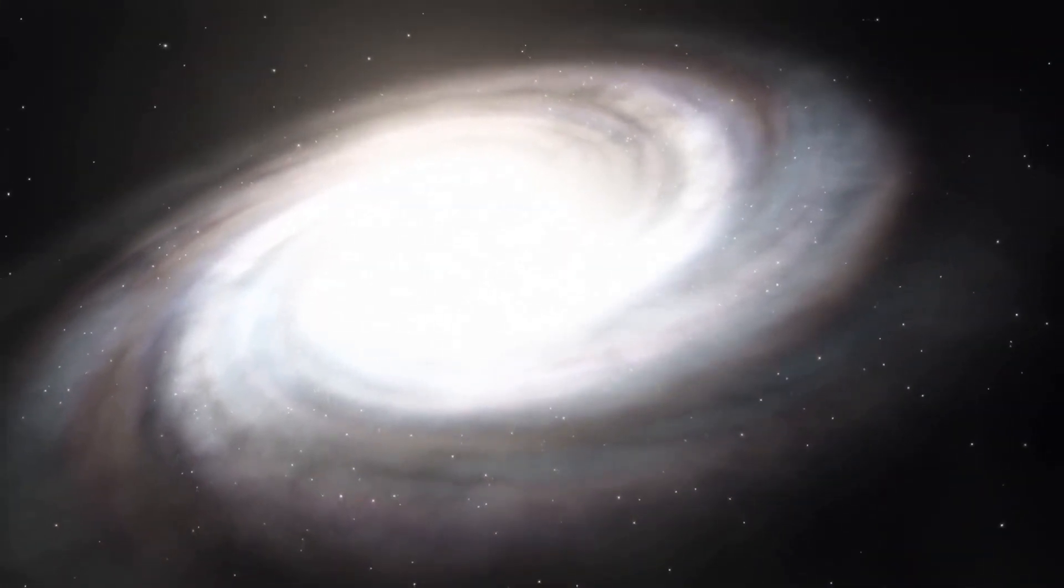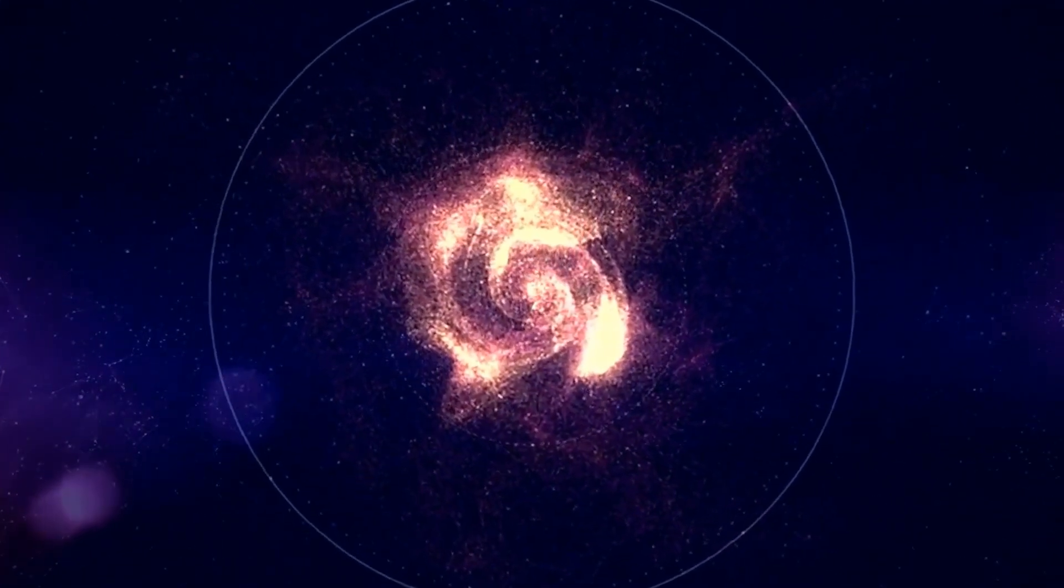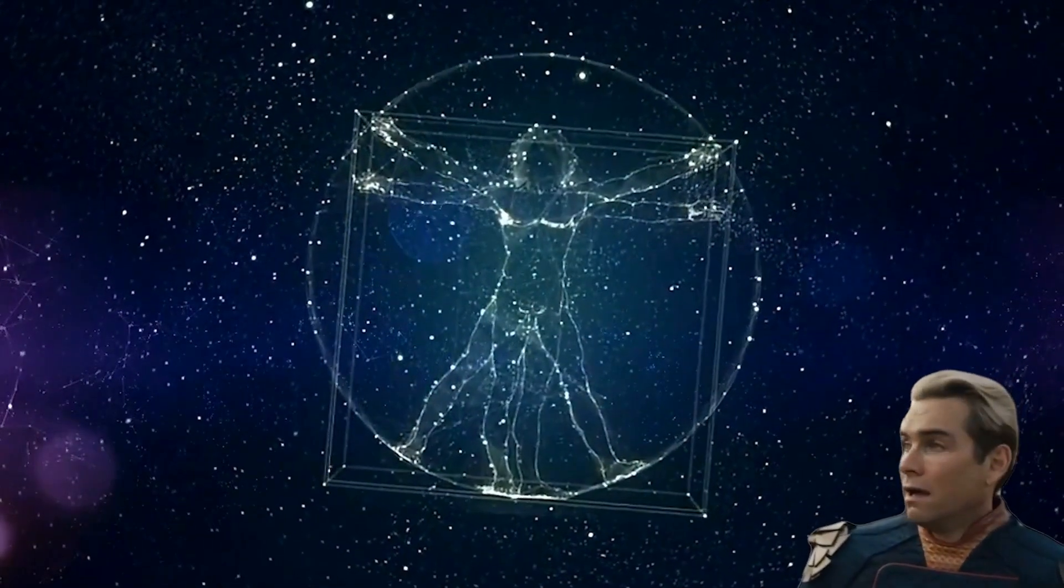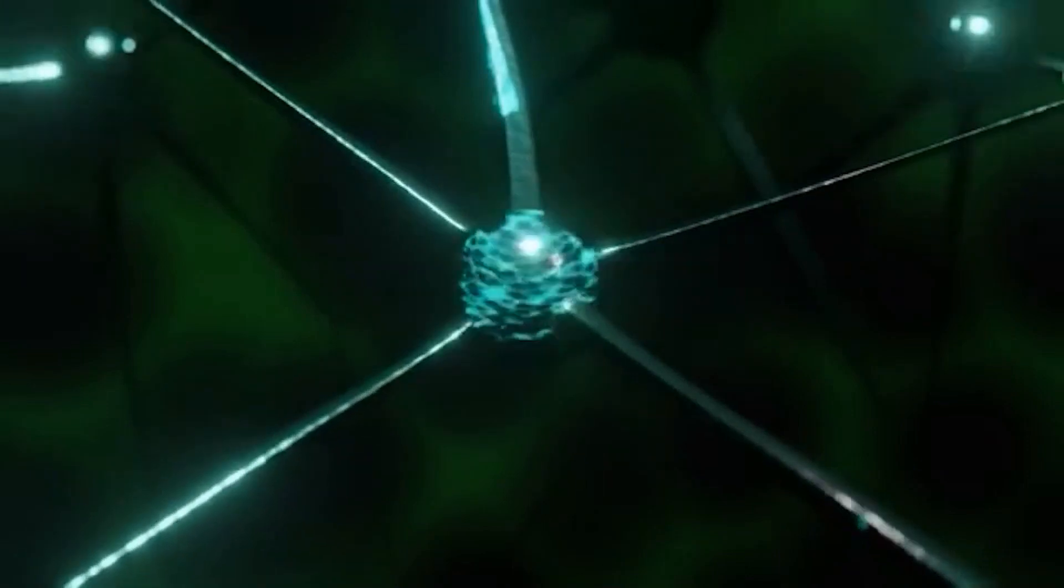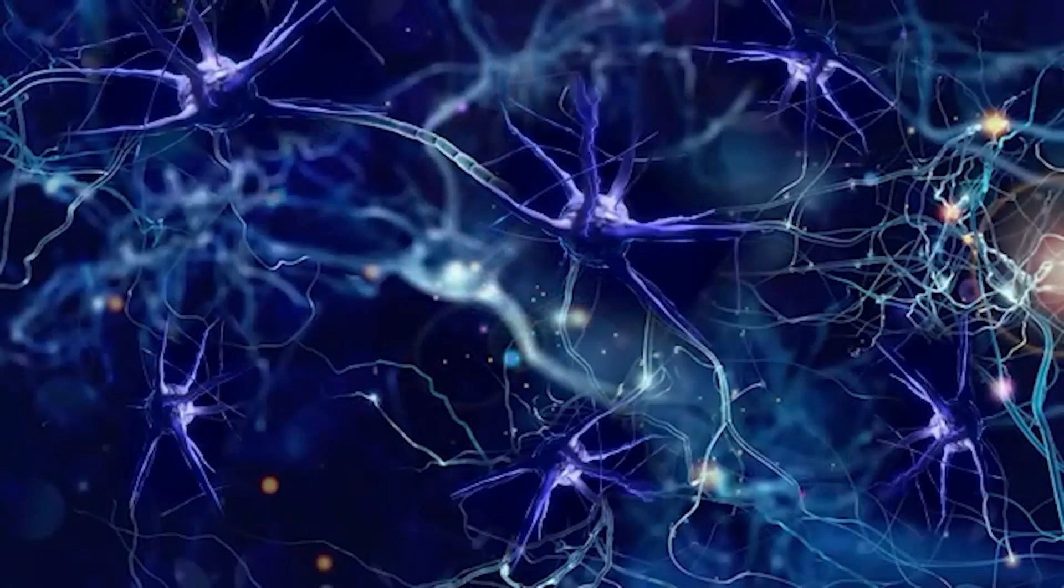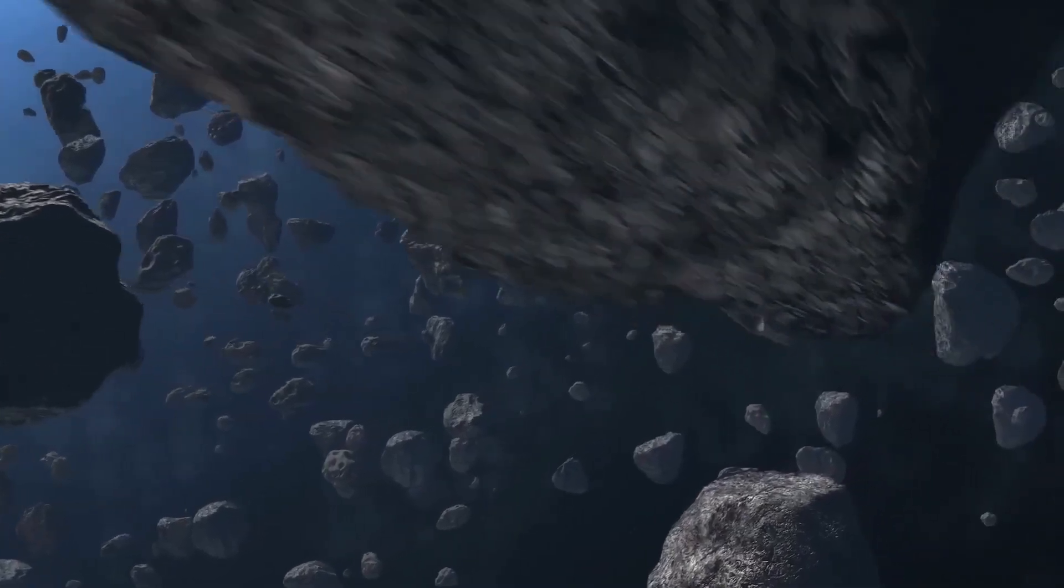In addition, data from the ViewMap space probe revealed unusual regions of elevated and reduced radiation levels, reminiscent of the anatomy of the human body, which is elongated along its axis and compressed laterally. This data might suggest that the universe isn't a perfect sphere, as was previously thought, but has a more complex and asymmetrical shape. So now think about it, is it a myth or some ancient knowledge?